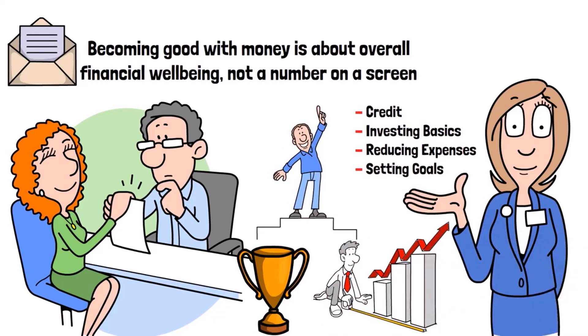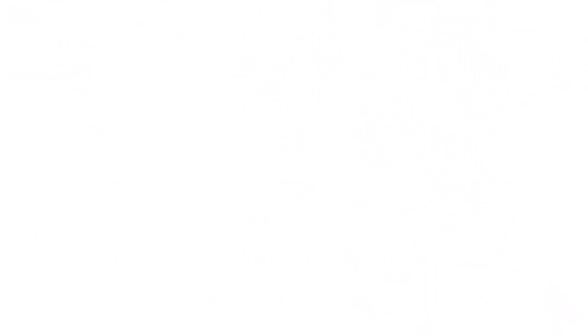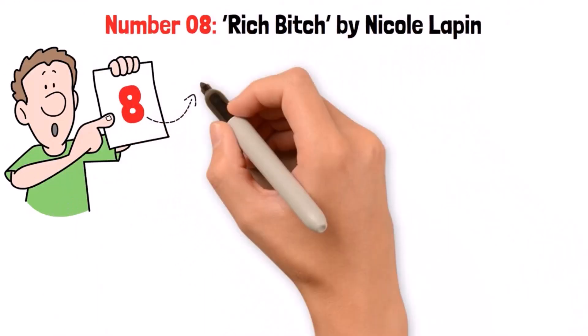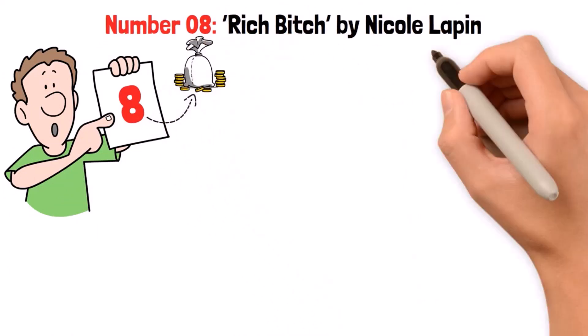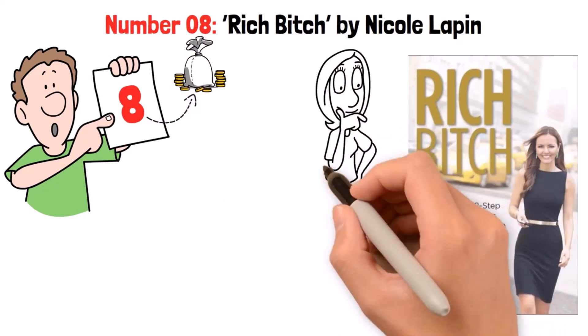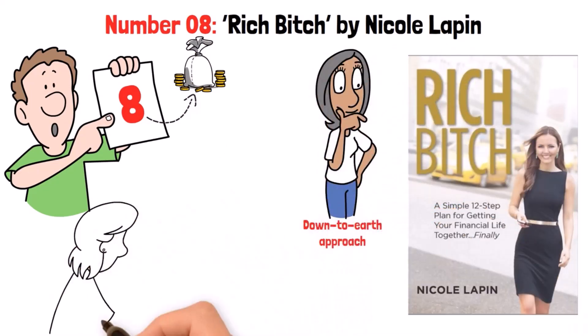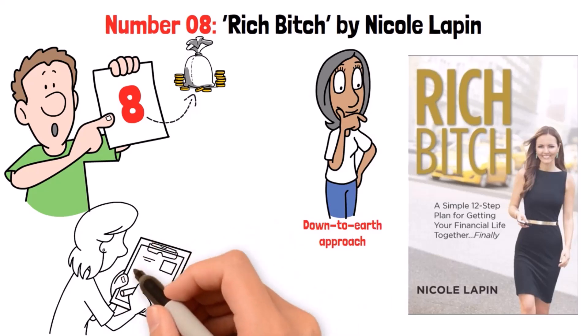Number 8: Rich Bitch by Nicole Lapin. Coming in at number 8 is a book that keeps it funkily real about money. What sets this book apart is Nicole's incredibly down-to-earth approach. She lays out her own foolproof 12-step plan to wealth but doesn't pretend she didn't screw up plenty along the way herself.